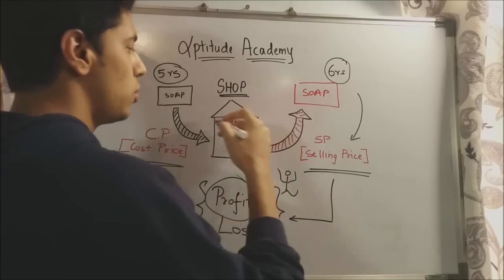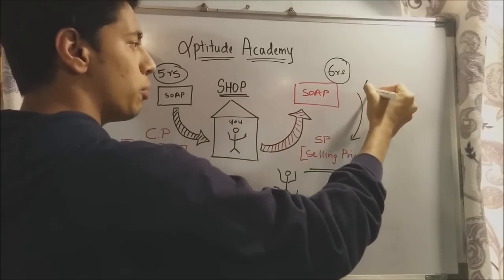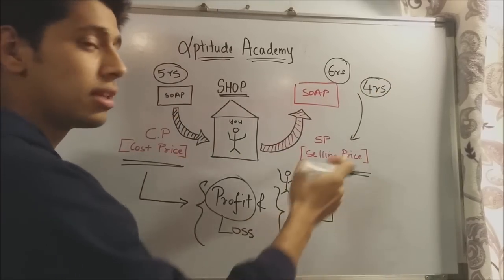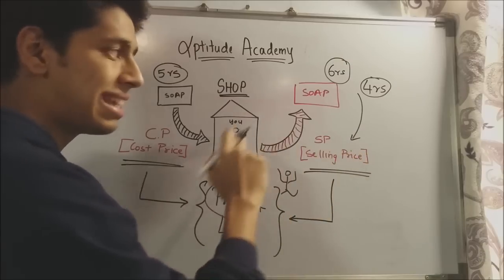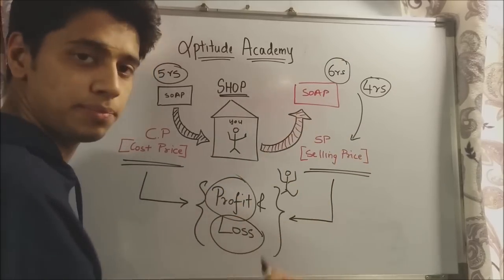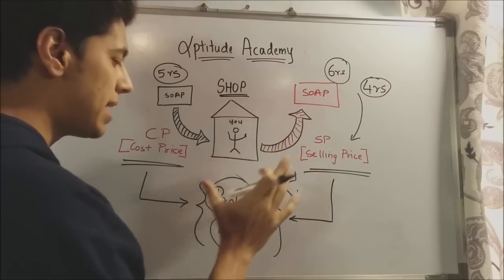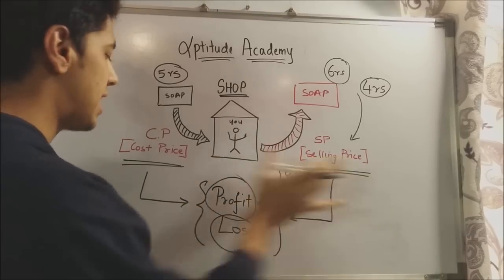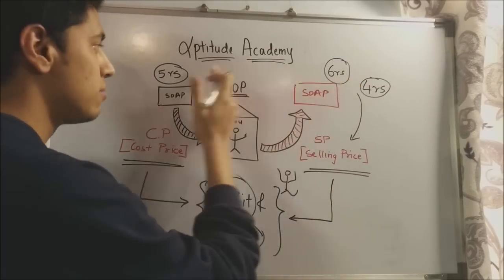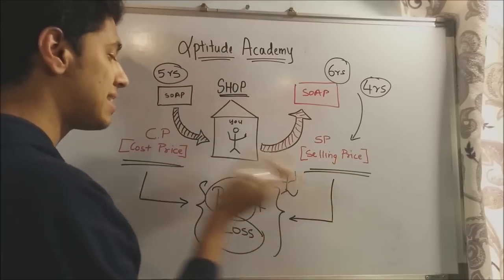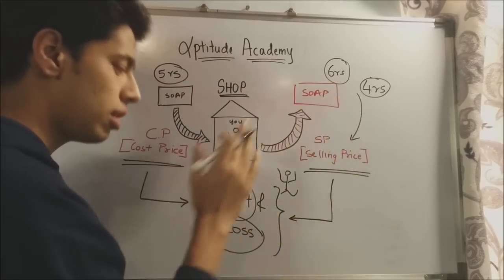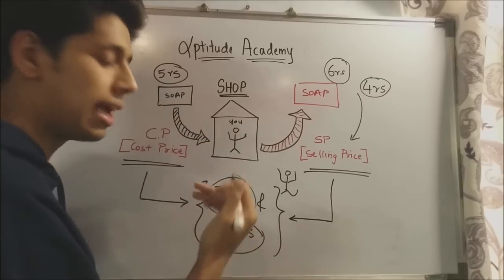Now suppose you sell the bar of soap for 4 rupees. First you had 5 rupees, now you have 4 rupees — your selling price has decreased and you've lost 1 rupee. That is your loss. So profit and loss is decided only by your selling price and cost price. If your selling price is more than cost price, it's a profit — 6 rupees is more than 5 rupees. If your selling price is less than your cost price, you have a loss. If selling price is more, it's a profit; if cost price is more, it's a loss.